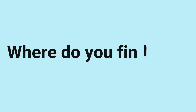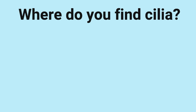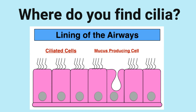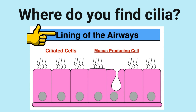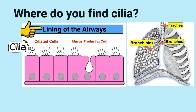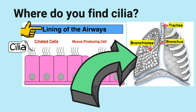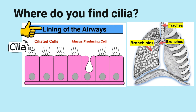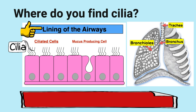Where do you find cilia? Cilia are hair-like projections and they are found on cells that line all of the airways — the trachea, the bronchi, the bronchioles — and they are responsible for wafting material upwards. All of the tubes that make up the respiratory system are lined with these ciliated cells and also mucus-producing cells.